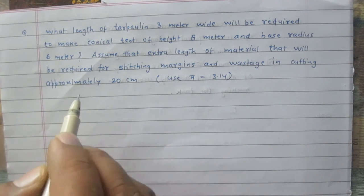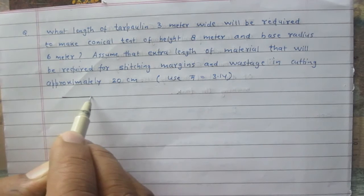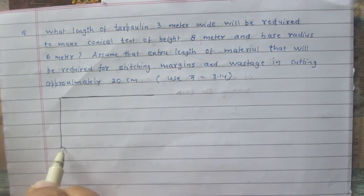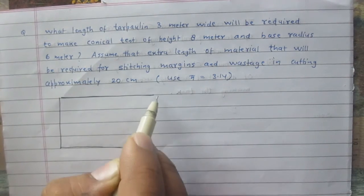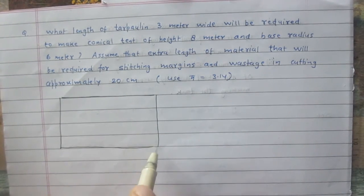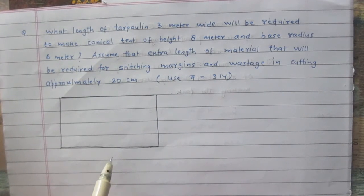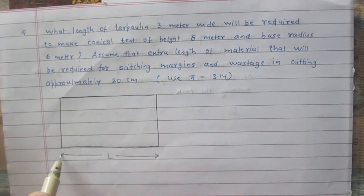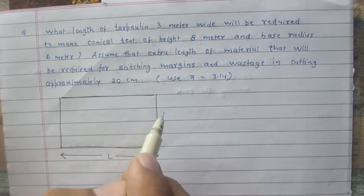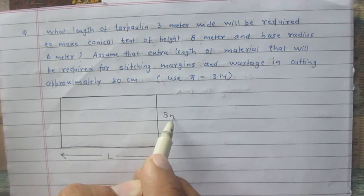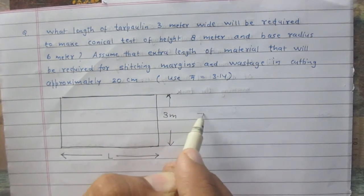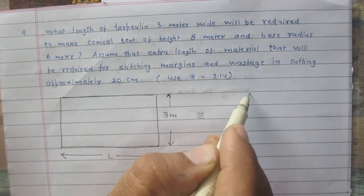Let us consider the diagram. In this diagram, the rectangle represents the tarpaulin cloth used. The length of this cloth is unknown — let us assume it is L, where L stands for the length of this tarpaulin cloth. The breadth of this cloth is 3 meters, as given. It is used in making this conical tent.